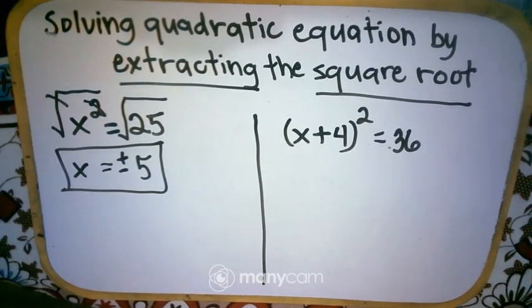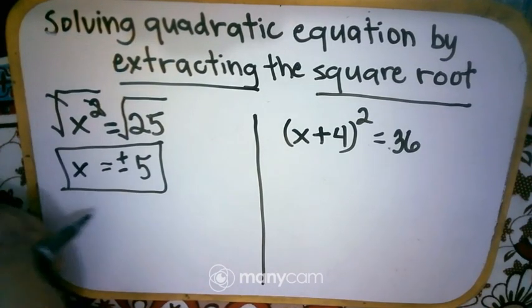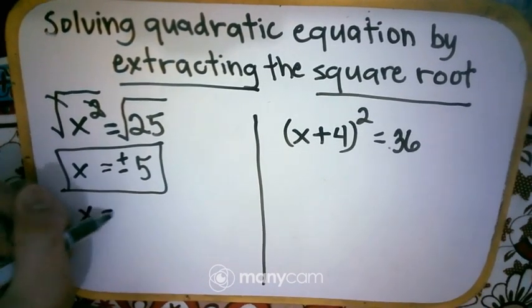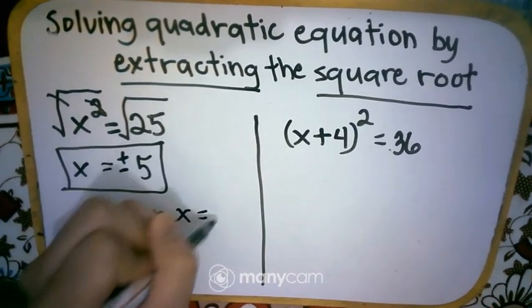So the answer is x is equal to positive negative 5. Now you can write that as x is equal to 5 or x is equal to negative 5.